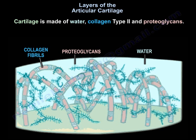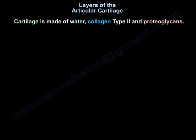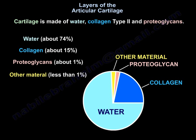The cartilage is made of water, collagen type 2, and proteoglycans. Water is about 74%, collagen about 15%, proteoglycan about 1%, and other material less than 1%.